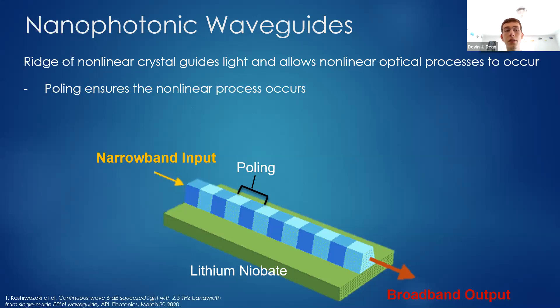The exact crystal that my project is working with is lithium niobate, and you'll notice another dimension of this waveguide is its width, which controls the speed of different colors of light within the waveguide.